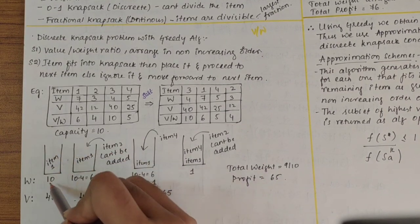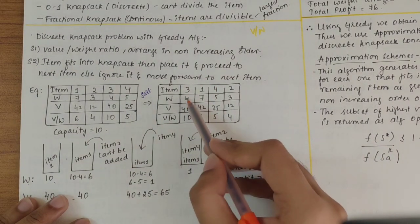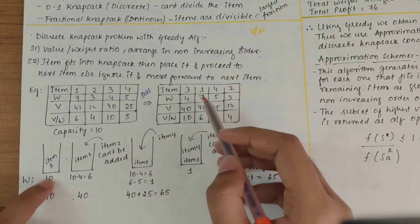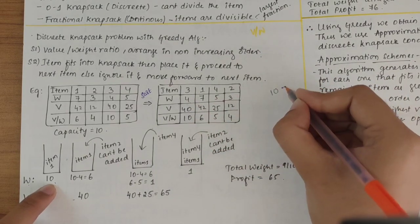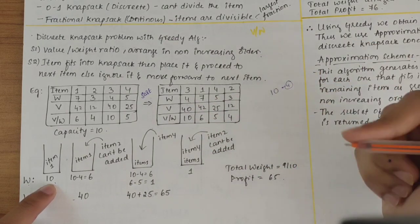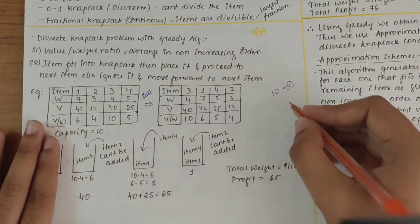Now I should start filling into the sack. Consider a sack here with weight capacity as 10. If I put item 3, weight is 4. I can store it. 10 is the capacity, I'm storing weight of 4, it is acceptable. Here value is 40. After storing item 3, I'm left out with only 6.